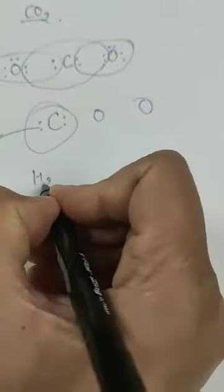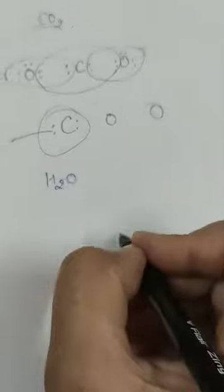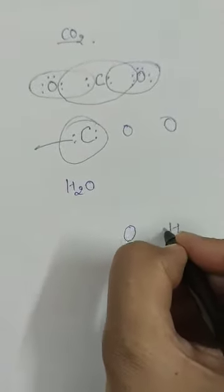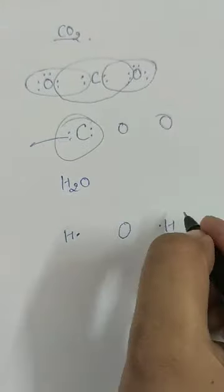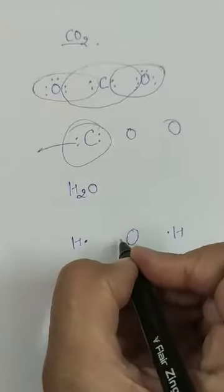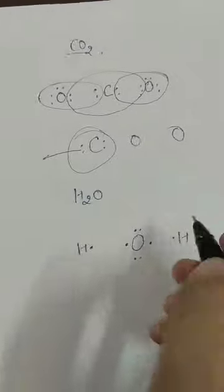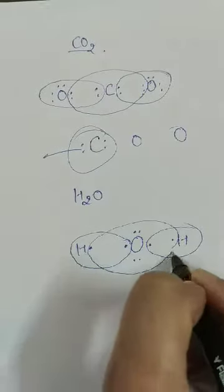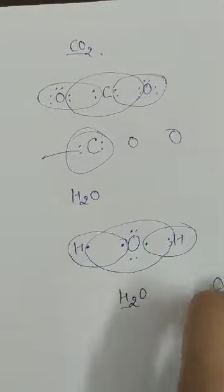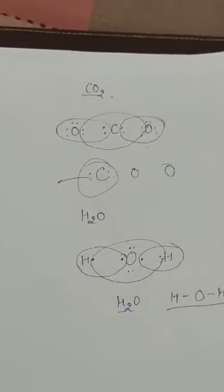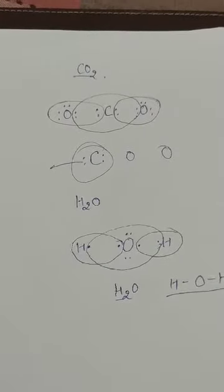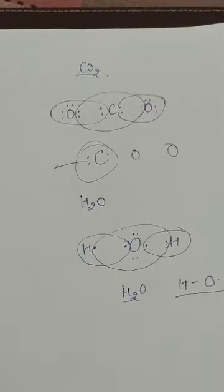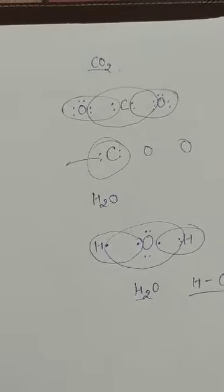We put carbon in the center and oxygen at the terminal positions. For the water molecule H₂O, we put oxygen in the center with two hydrogens. Oxygen shares electrons with each hydrogen, completing the bonding. This is how we show the covalent bonding in homoatomic and heteroatomic molecules.